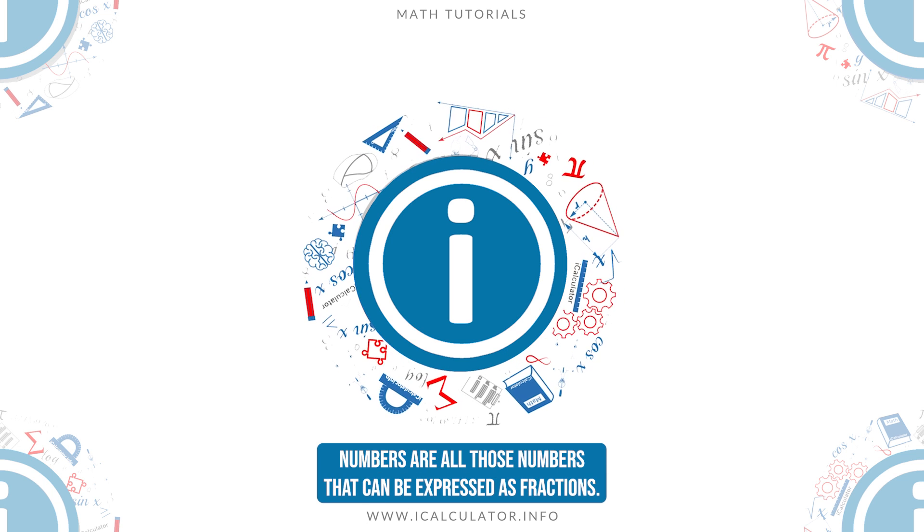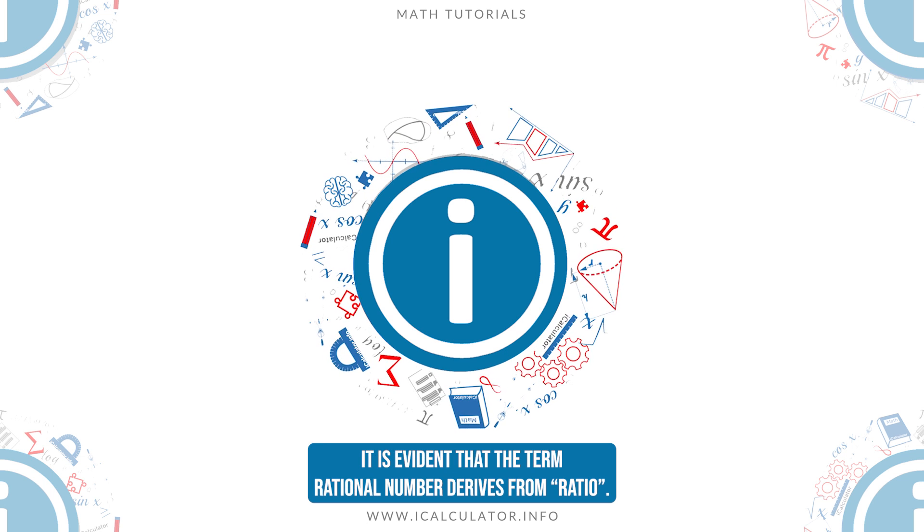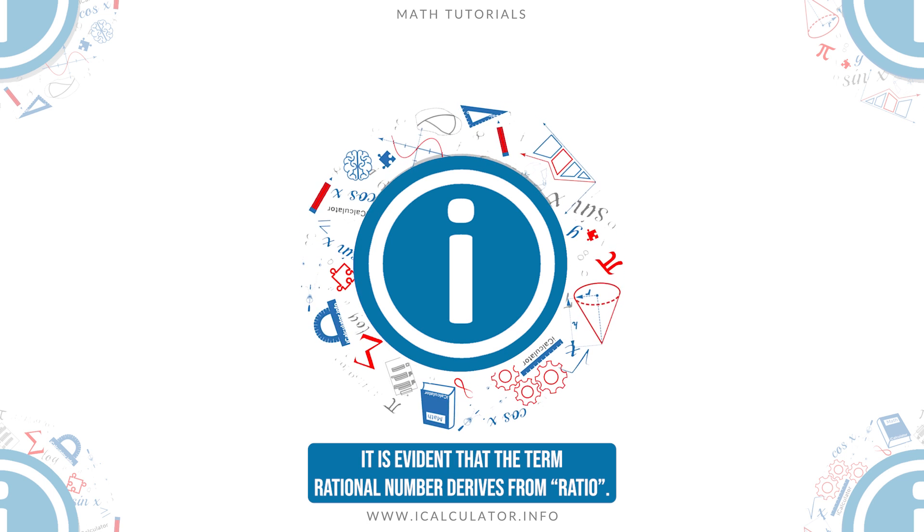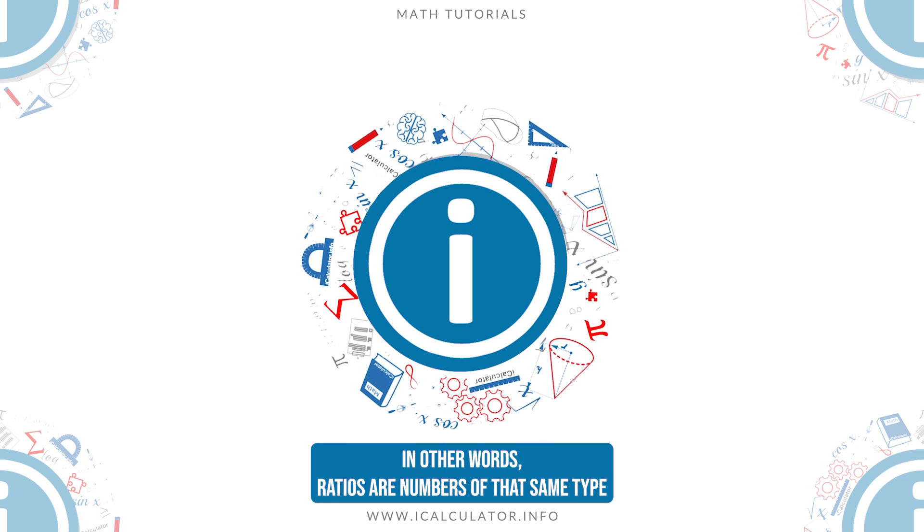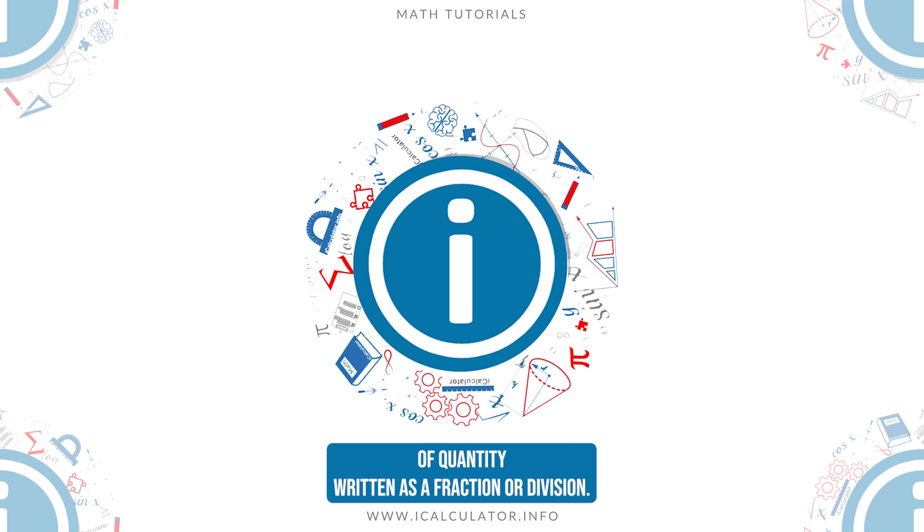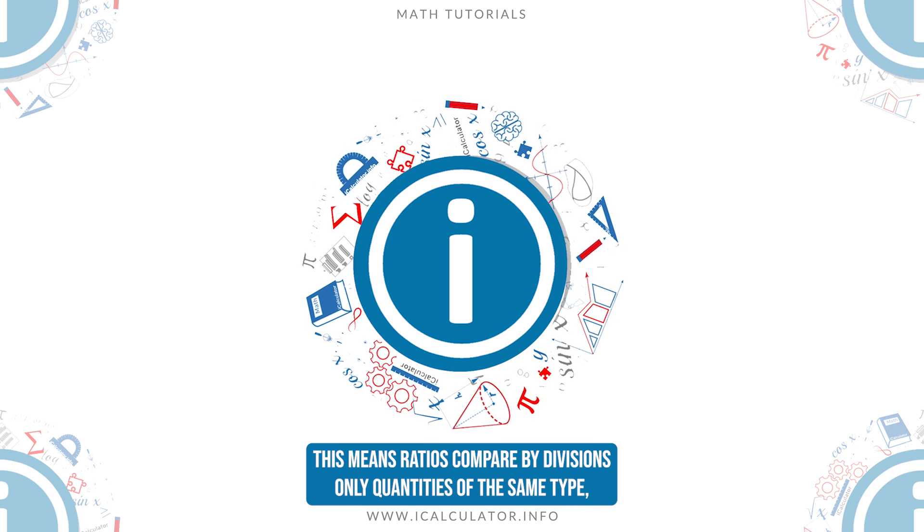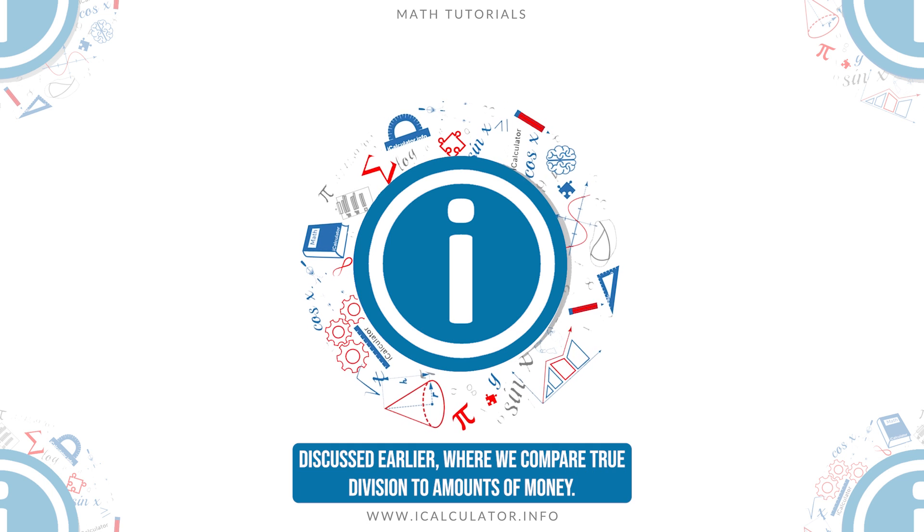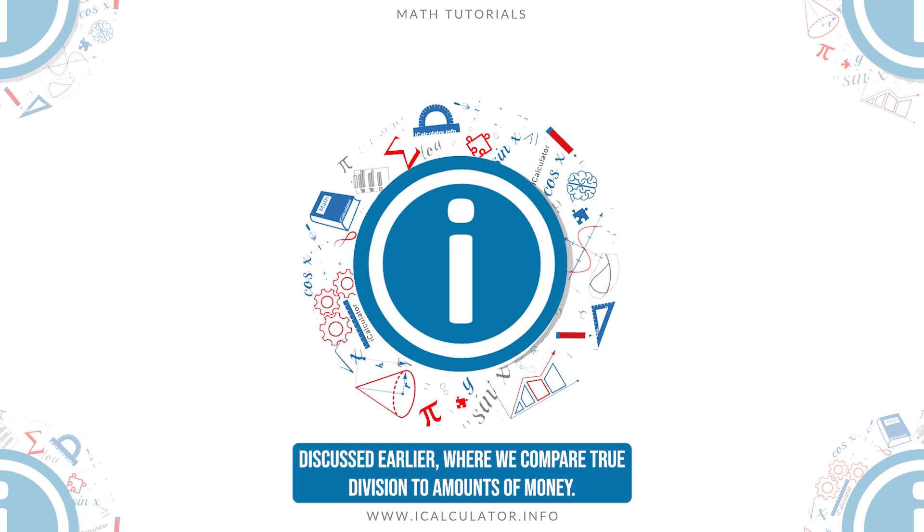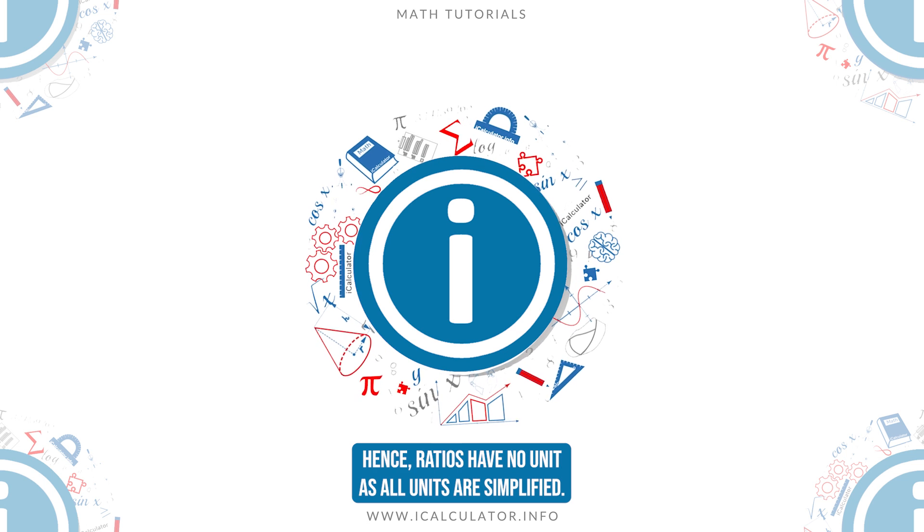We know that rational numbers are all those numbers that can be expressed as fractions, it is evident that the term rational number derives from ratio. In other words, ratios are numbers of the same type of quantity written as a fraction or division. This means ratios compare by divisions only quantities of the same type, such as in the example discussed earlier where we compared through division two amounts of money. Hence, ratios have no unit as all units are simplified.